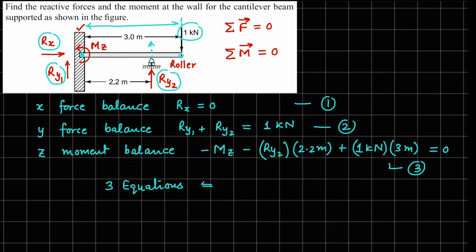And how many unknowns do we have here? We have Rx, Ry1, Ry2 and Mz. So it looks like we have 4 unknowns. And since unknowns are more than the number of equations, we cannot solve this. And if we cannot solve the system, we call it statically indeterminate system.